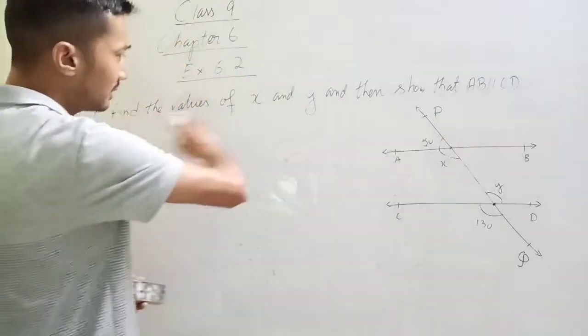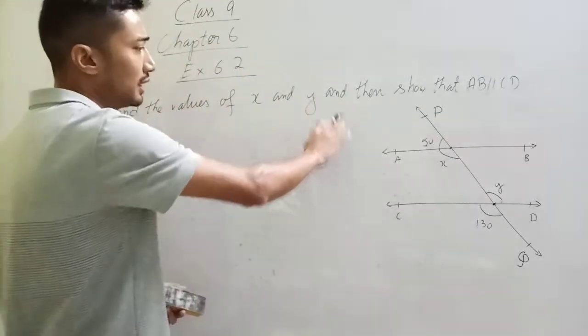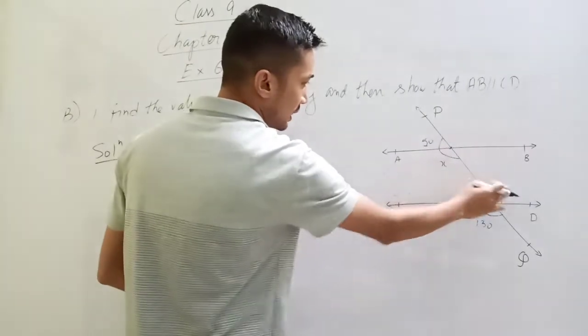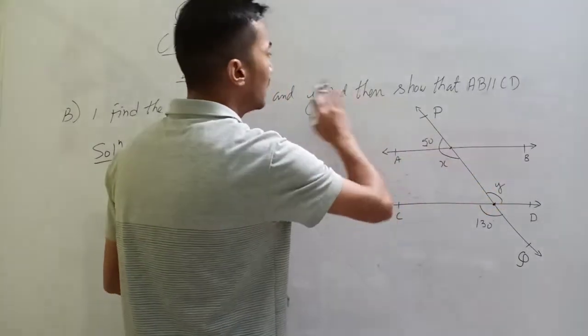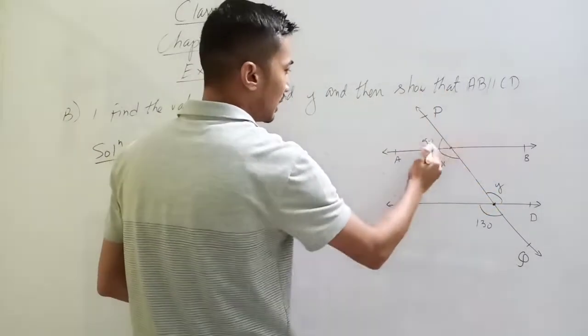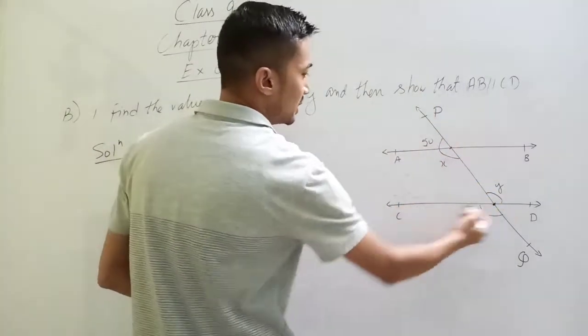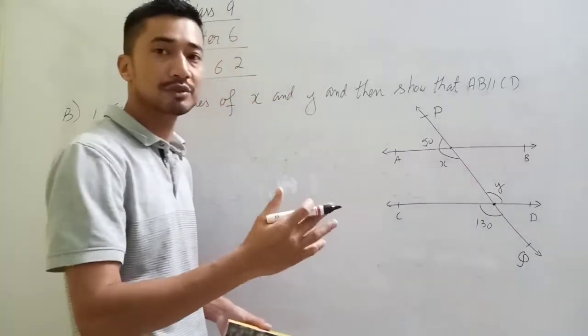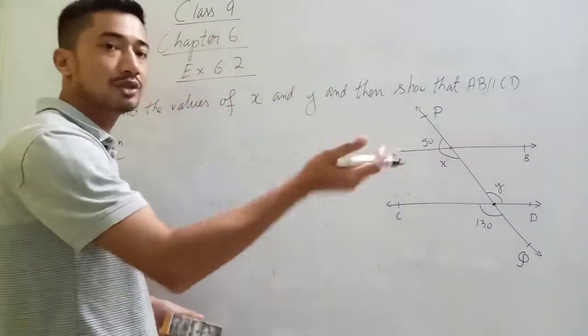So the question is: find the values of x and y. The diagram has angle x and angle y. Also show that AD is a line and CD is parallel.